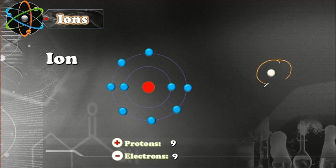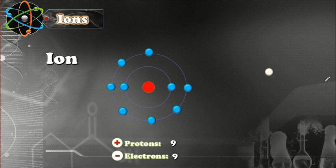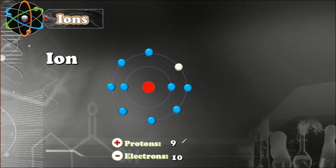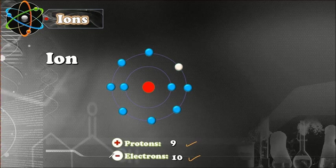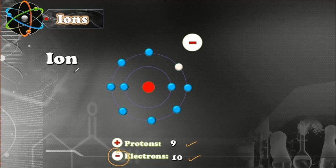What happens if, in a chemical bonding, an electron joins this atom? Now we look at the number of protons: we have nine protons and ten electrons. The number of electrons is bigger, and the charge of an electron is negative, so the charge of this atom is now negative. It is no longer an atom — it is an ion. A negative ion we call an anion.